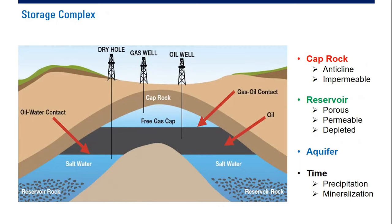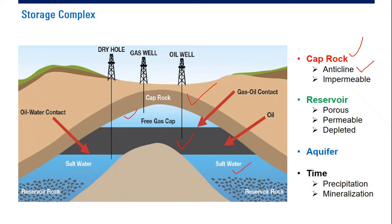The storage complex is quite familiar for us. We need cap rock, of course, just like an oil and gas reservoir. We know there will be a gas cap, there will be an oil zone, there will be an aquifer. This is also the system for storage. We need the cap rock, and it is good if the cap rock is anticline — seperti mangkuk terbalik — so that the CO2 will be stored there. The cap rock should be impermeable so that it will be a good trap for the CO2.